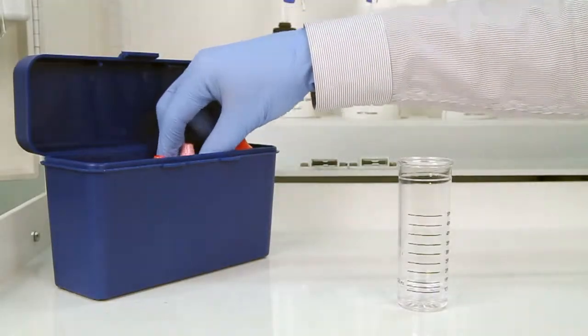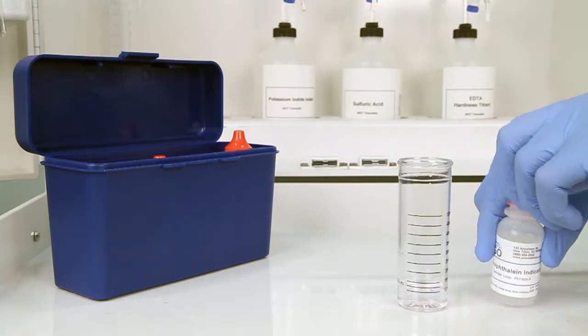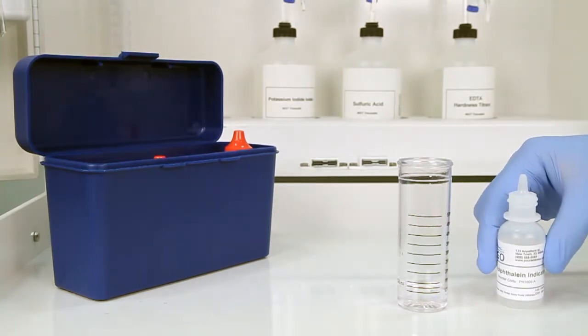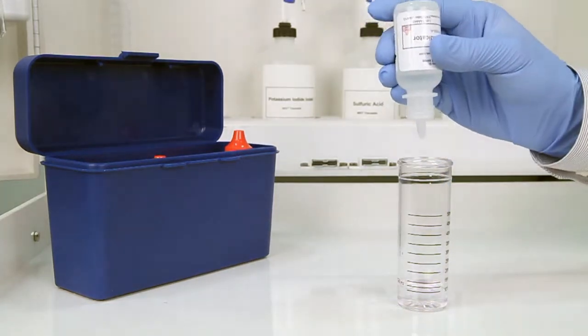Once you have collected an accurate sample, the next step is to add three drops of phenolphthalein indicator. The bottle contains a dropper tip, so it's important to hold the bottle vertically to get a consistent drop size.